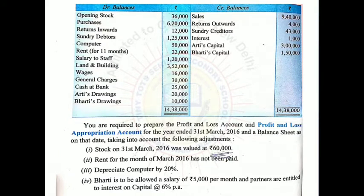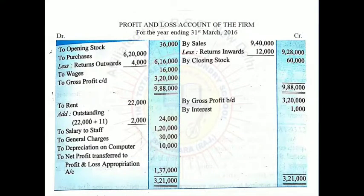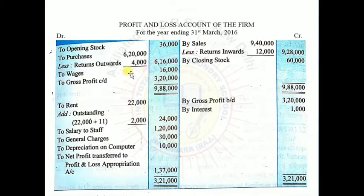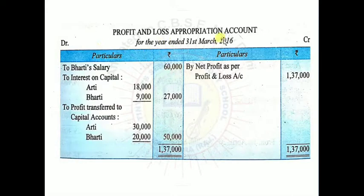First let's prepare all three formats. Make the accounts in your notebook alongside me and record entries as I explain, so there's no confusion later. First make the Profit and Loss Account of the firm for the year ending 31st March 2016 — with debit, credit, particular, and amount columns. Then leaving some lines, make another account: Profit and Loss Appropriation Account for the year ending 31st March 2016, also with four columns.